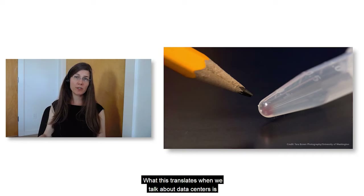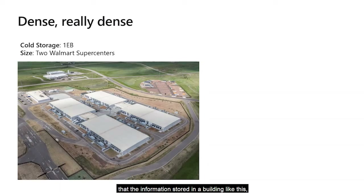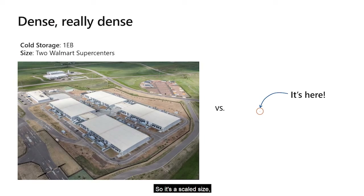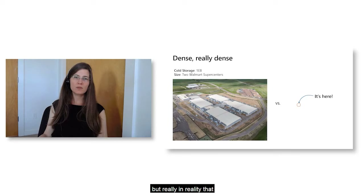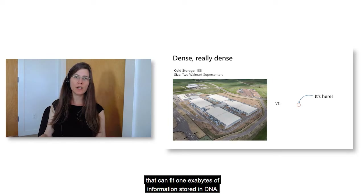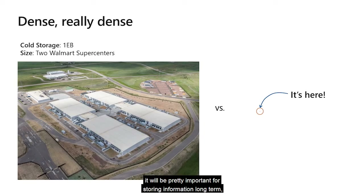What this translates to for data centers is that the information stored in a building that can house about one exabyte of information today, if scaled to the size of DNA, can fit in about a cubic inch of volume — essentially in the palm of your hand. Density is quite important, and we think it will be very important for storing information long-term — so archival storage.